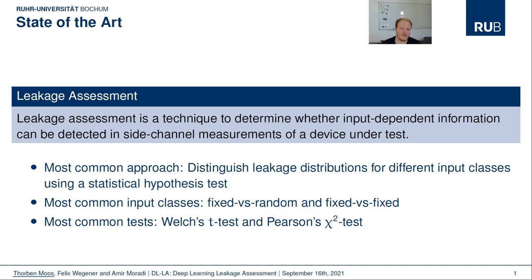The most common approach to perform leakage assessment is to try to distinguish leakage distributions for different input classes using a statistical hypothesis test. The most commonly used input classes are fixed vs. random, where one group for fixed input is collected and one group for many different random inputs, and also fixed vs. fixed, where two groups for two distinct fixed inputs are collected. Then either the Welsh T-test or the Pearson's G-square test are used to evaluate the null hypothesis, which states that both groups are drawn from the same population and therefore indistinguishable.